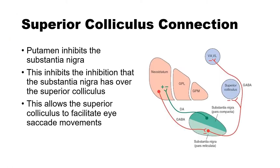Regarding the superior colliculus connection: the putamen inhibits the substantia nigra, which inhibits the inhibition that the substantia nigra has over the superior colliculus — a double inhibition — allowing the superior colliculus to facilitate saccadic eye movements. The pathway runs from the frontal eye field to the caudate, then to the putamen.